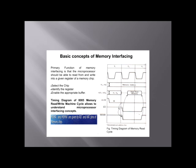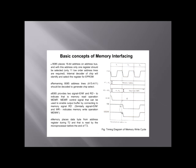Here we have shown the timing diagram of the memory read cycle. The 8085 places a 16-bit address on the address bus, and with this address only one register should be selected. The internal decoder of the chip will identify and select the register for EPROM. The remaining 8085 address lines from A15 to A11 should be decoded to generate chip select. The 8085 provides two signals — IO/M̄ and R̄D̄ — to indicate a memory read operation. It is a control signal used to enable the output buffer by connecting to the memory signal R̄D̄. Memory places the data byte from the addressed register during T2, and it is read by the microprocessor before the end of T3.